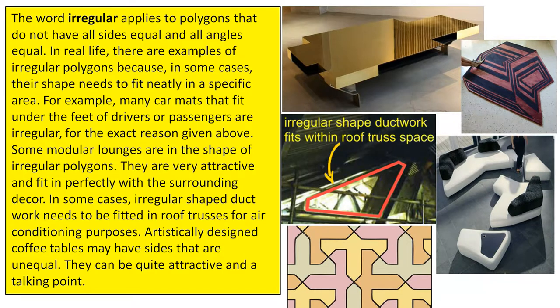Some modular lounges are in the shape of irregular polygons. They are very attractive and fit in perfectly with the surrounding decor. In some cases, irregular shaped ductwork needs to be fitted in roof trusses for air conditioning purposes.